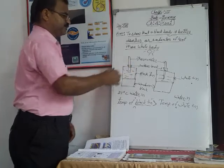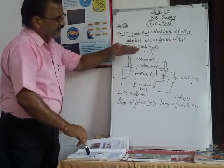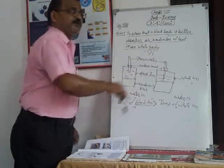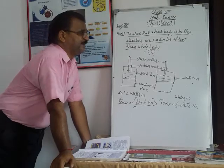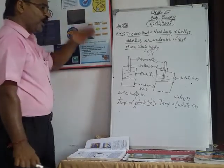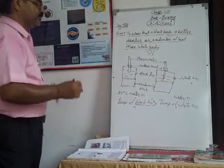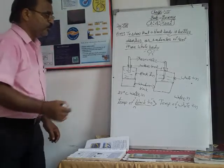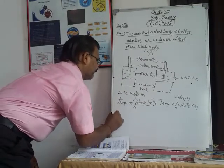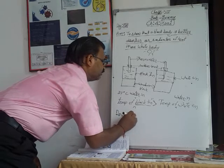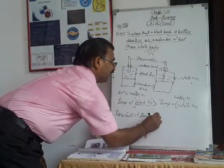For the second part, we again set up the same arrangement, note the initial temperatures, heat both the black tin and the white tin to a definite level, and then place them in a shady place where no sunlight is coming. We allow them to cool.